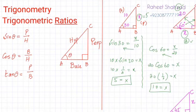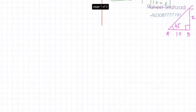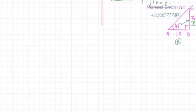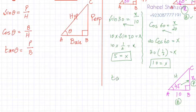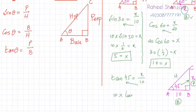Now let's do one example using tan of theta. In this right angle triangle, we have the base, perpendicular, and hypotenuse. We need the perpendicular and base relationship, so we apply tan theta. Tan theta = perpendicular over base, so: tan 45 = x / 10. Cross-multiplying: x = 10 × tan 45. Using a calculator, tan 45 = 1, so x = 10.